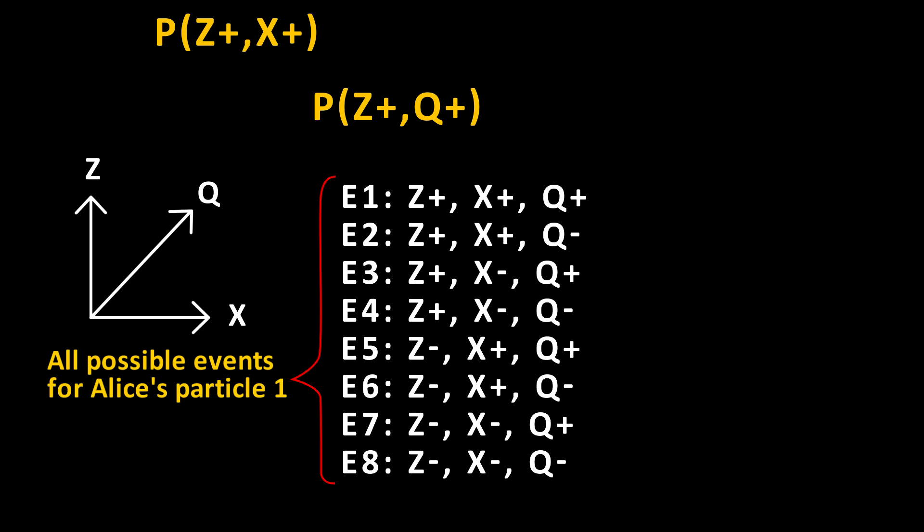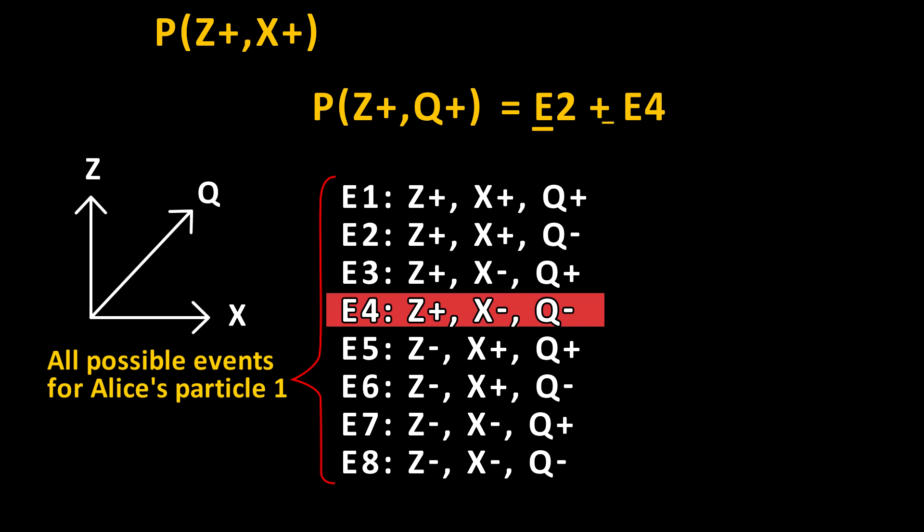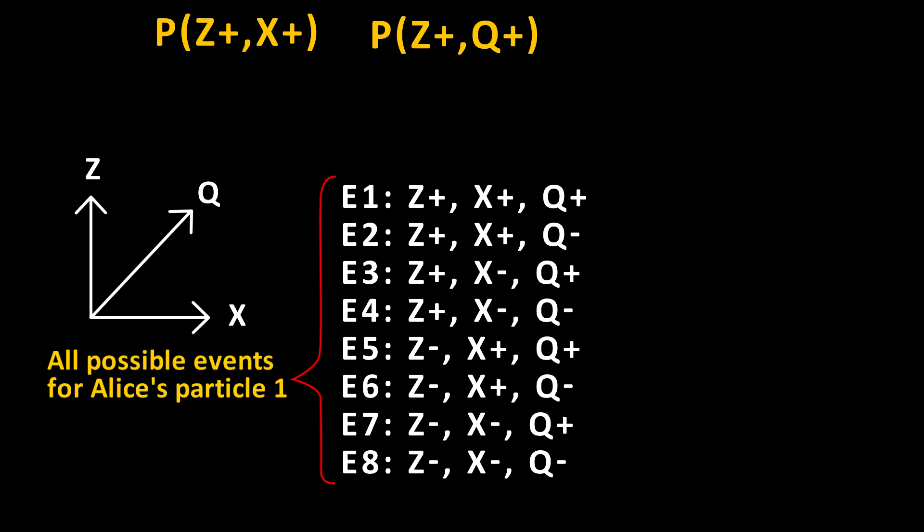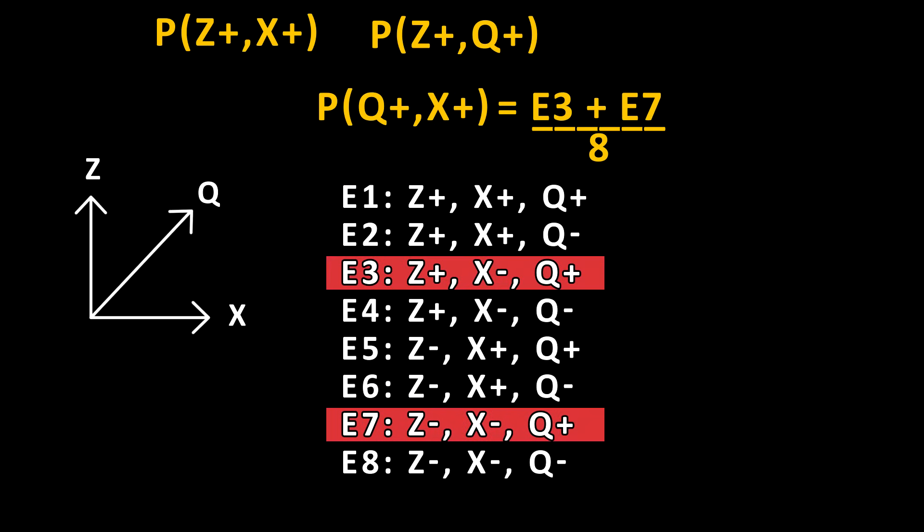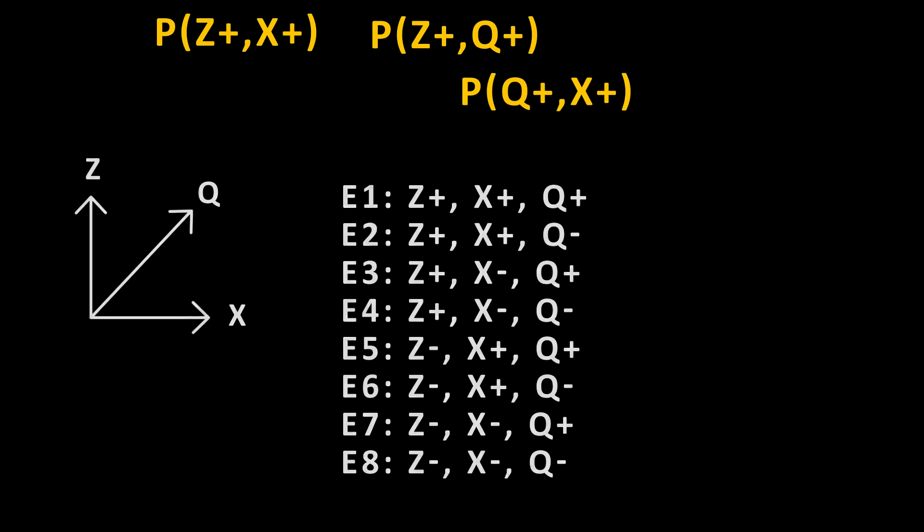Let's do this for two more scenarios. What is the probability that Alice measures positive in the z direction and Bob measures positive in the q direction? In this scenario it would be event 2 and 4. Again we divide by 8 to get the probability. And the third case is, what is the probability that Alice measures positive in the q direction and Bob measures positive in the x direction? This would be event 3 and 7 divided by 8 for probability. So these are the three probabilities given the hidden variables theory.